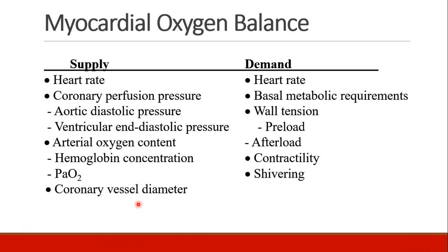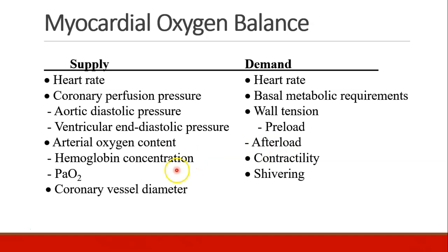We talk a lot about supply and demand when discussing myocardial oxygen balance. Factors affecting oxygen supply include heart rate, coronary perfusion pressure (influenced by aortic diastolic pressure and ventricular end-diastolic pressure), arterial oxygen content (affected by hemoglobin concentration and partial pressure of oxygen), and coronary vessel diameter — as those vessels get narrow due to coronary artery disease, it becomes harder to supply adequate oxygen to the cardiac muscles.